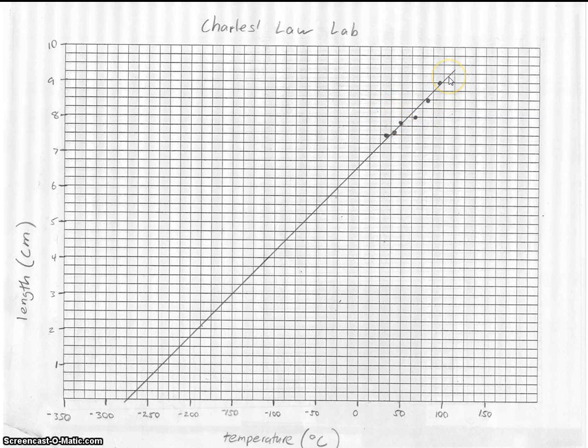So your graph should look something like this, with all of your data kind of consolidated in one spot up here. Now you're probably wondering why we asked you to make a graph that went down to minus 350 degrees, when of course the coldest that your sample got was about 20 degrees. Well, here's why.